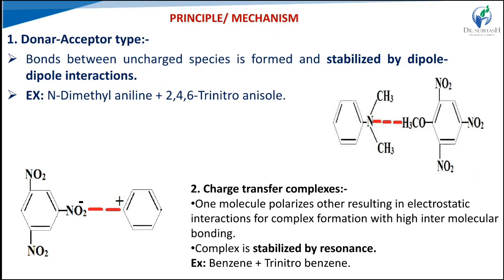The donor-acceptor type organic complex: a bond between uncharged species is formed and stabilized by dipole-dipole interactions. Charge transfer complexes involve one molecule polarizing another, resulting in electrostatic interactions for complex formation with high intermolecular bonding. Examples include: donor-acceptor type — methyl aniline plus 2,4,6-trinitroanisole; and charge transfer complex — benzene plus trinitroanisole.